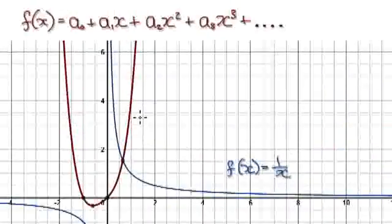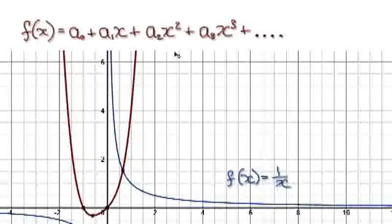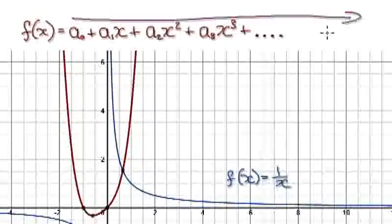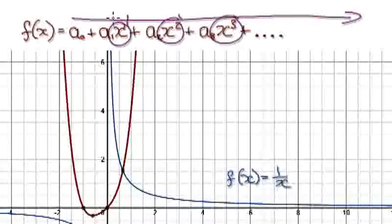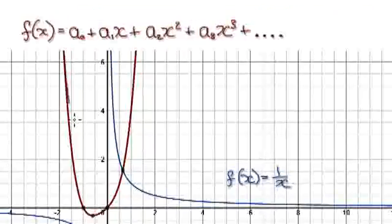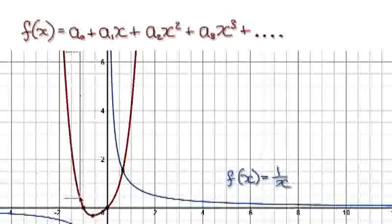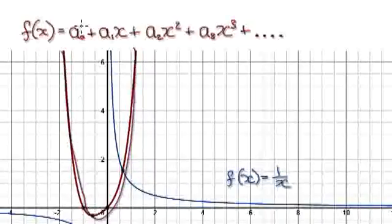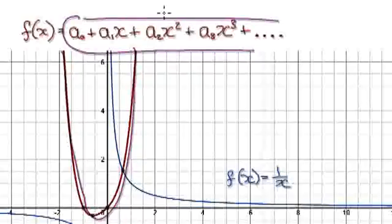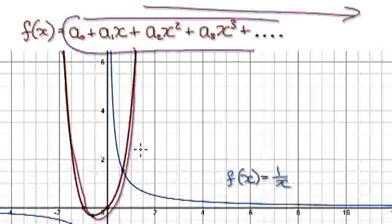To do this, we start out with the general series: x to the power of 1, x squared, x to the power of 3, and so on, all the way to infinity. Let's say this red line here represents that function all the way to infinity.